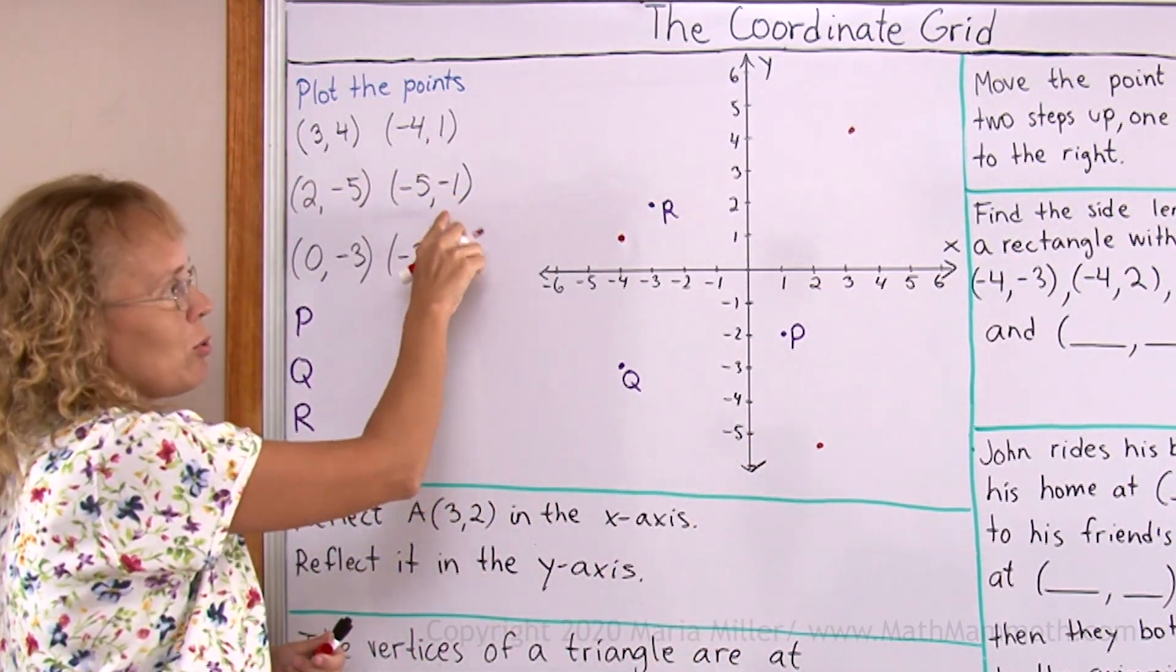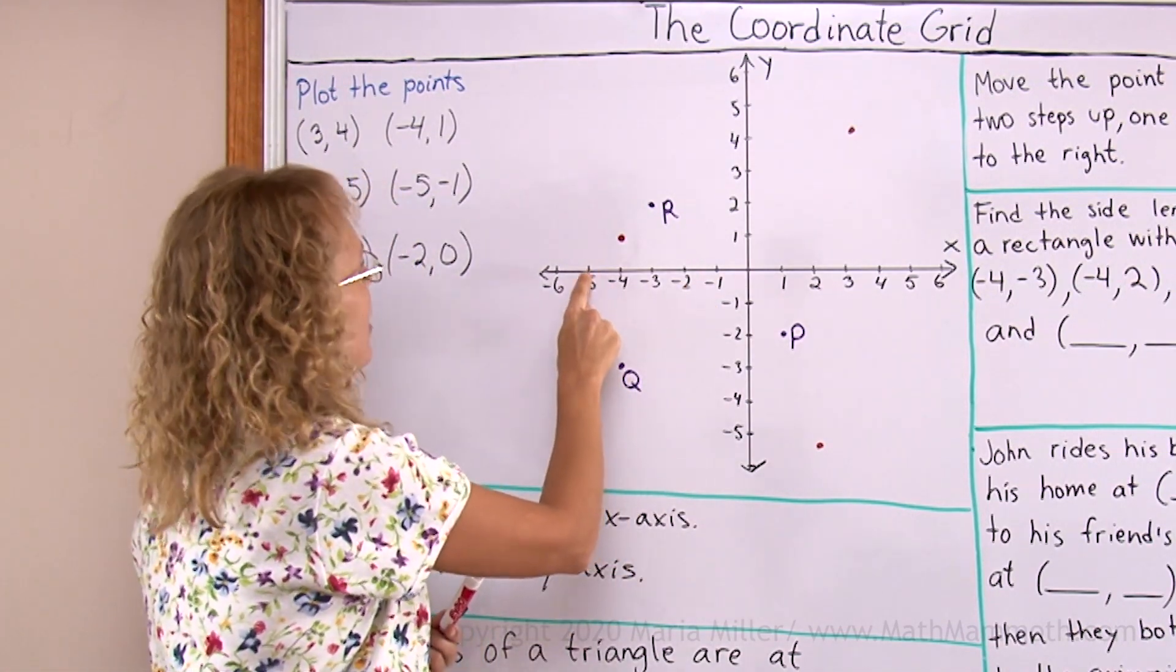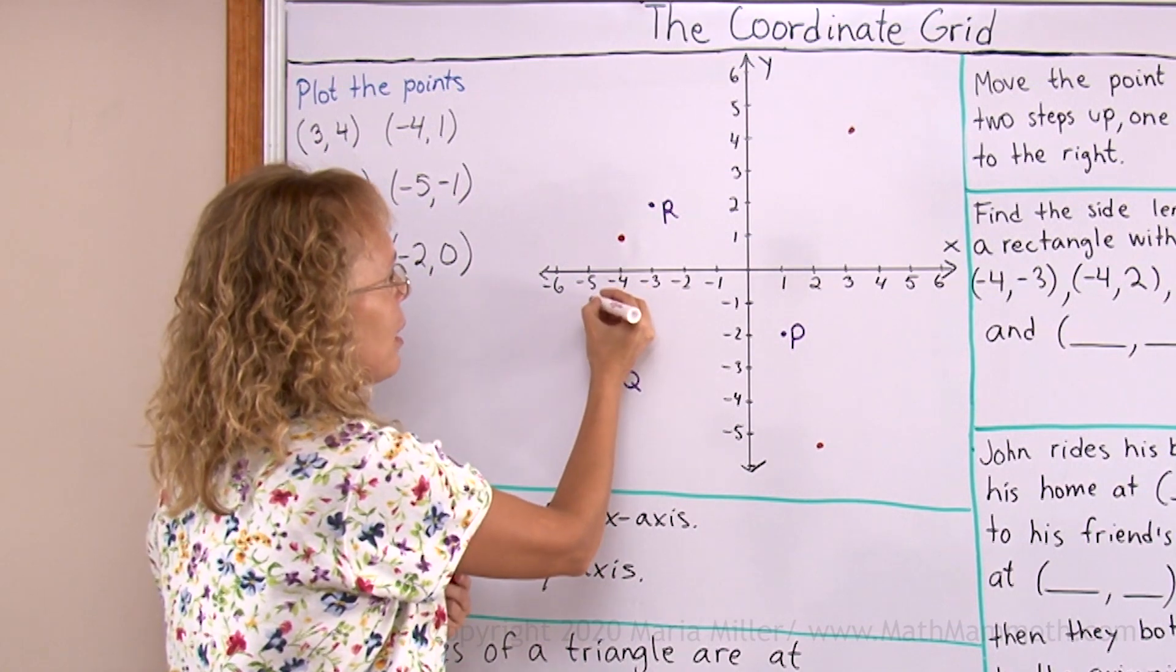(-5,-1). First I go to -5 on the x-axis over here. Then -1 means I go down one step.